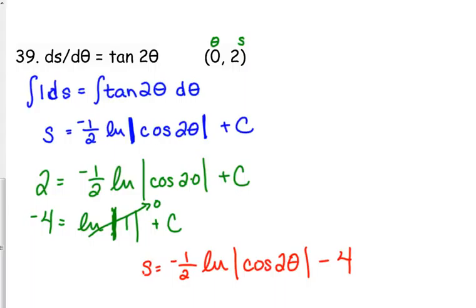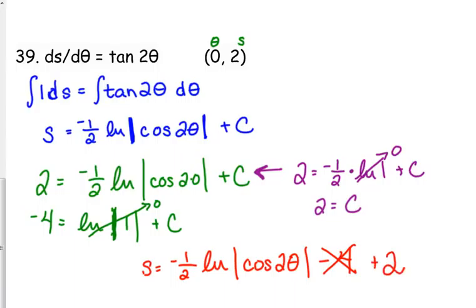So, my bad. I made a mistake. You cannot get rid of that negative one half unless you multiply the entire thing by negative 2, including c. So that means this needs to be 2 is equal to one half times the natural log of 1 plus c. The natural log of 1 is 0, so 2 is our c, not negative 4.